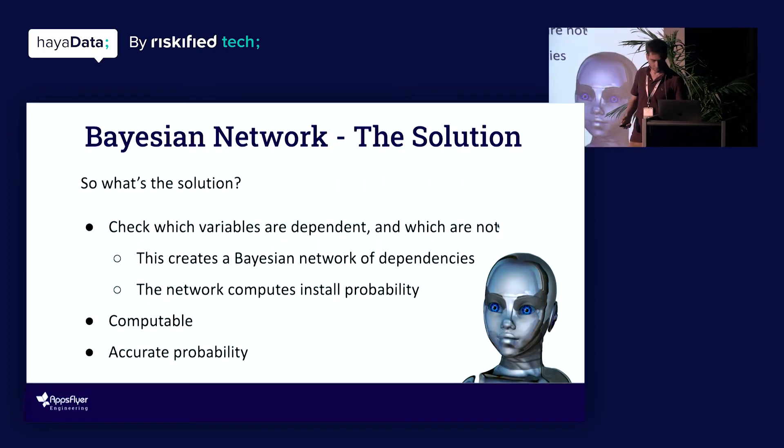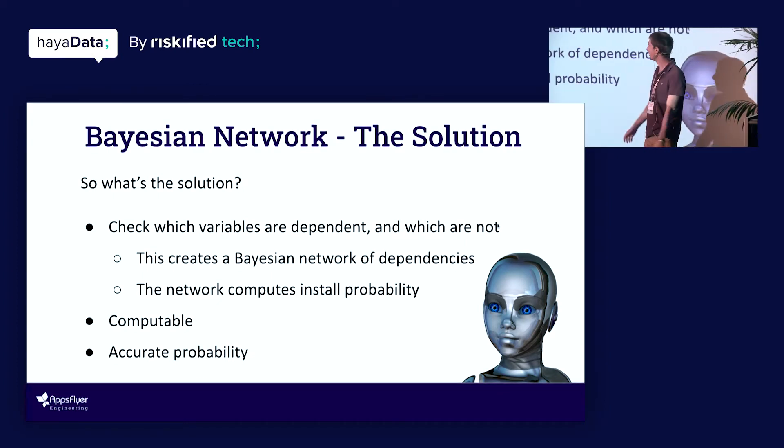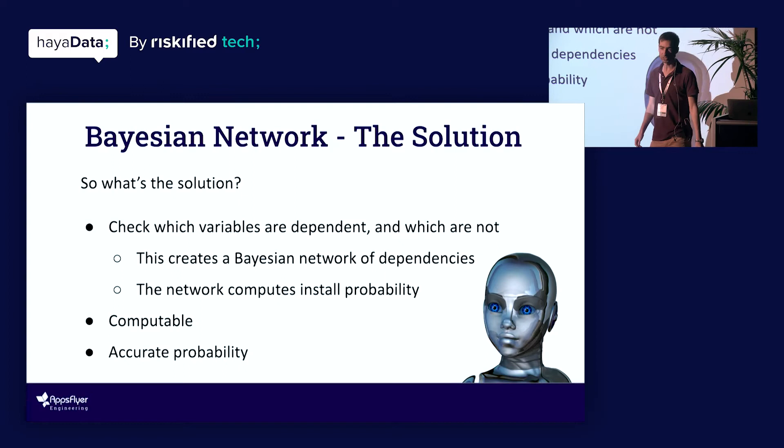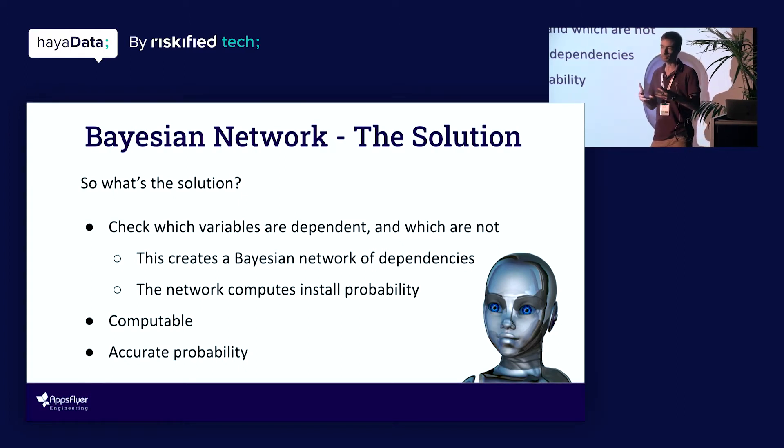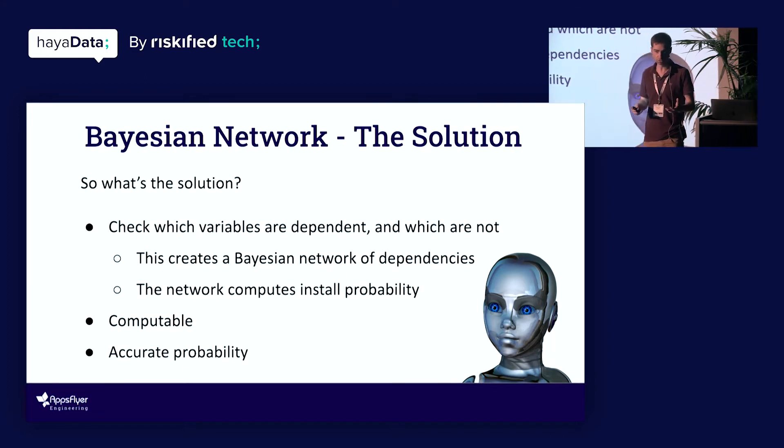So we don't want to do that. What can we do instead? Bayesian networks. Essentially, what a Bayesian network does is sort of calculate which of these variables are codependent and which ones are not. So we want to study if, for every two variables, if they're dependent, essentially we're going to have an edge between them in the network. And if they're not, then we're not going to have an edge between them. And then using that network, we're going to be able to still compute the install probability while not engaging in too complex computations. So it's going to yield, hopefully, the correct probability with a reasonable computation to make. That's what we're aiming for.